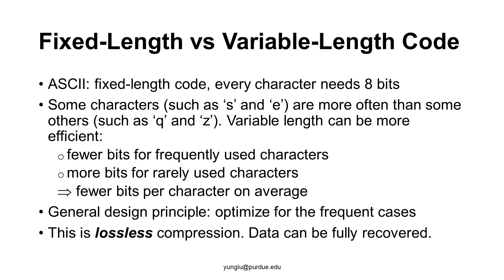Huffman compression is an example of variable length coding. What does that mean? Consider ASCII coding, the American Standard Code for Information Interchange. Each character is encoded using 8 bits. This is simple but somewhat wasteful.